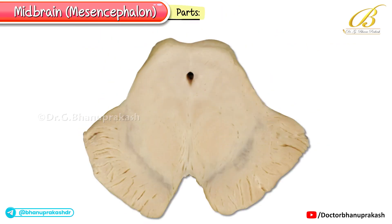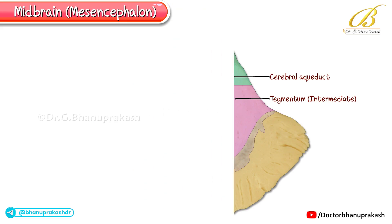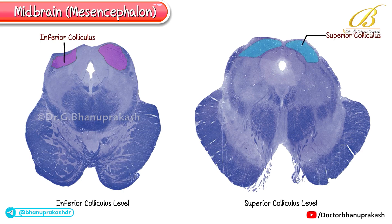Moving inside, the midbrain can be divided into three main parts: one, tectum (dorsal); two, tegmentum (intermediate); three, crus cerebrae (ventral base). Running through the center is the cerebral aqueduct. For ease of study, we typically examine the midbrain at two levels: the inferior colliculus level and the superior colliculus level. However, the crus cerebrae remains a constant feature in both cross-sections.